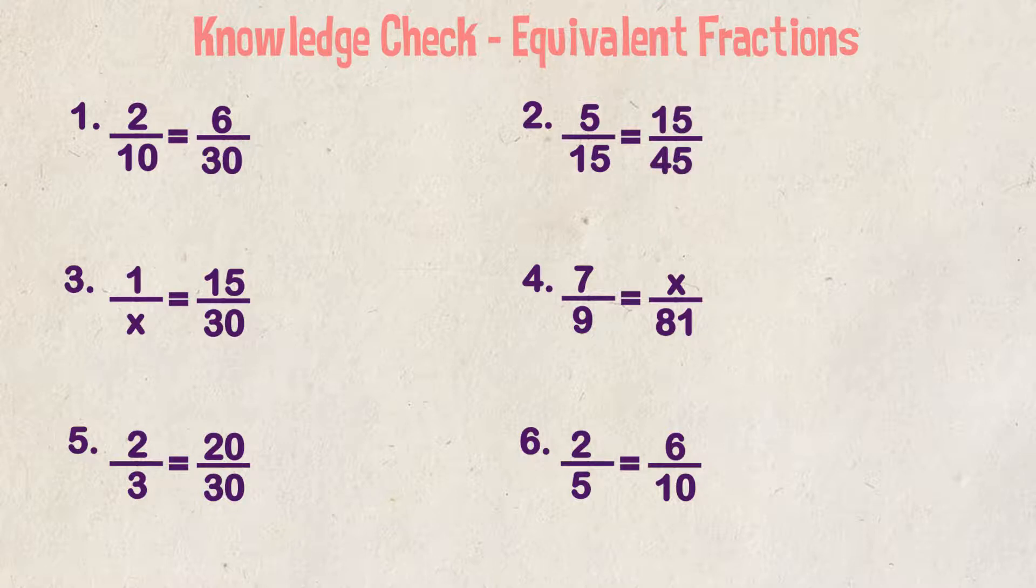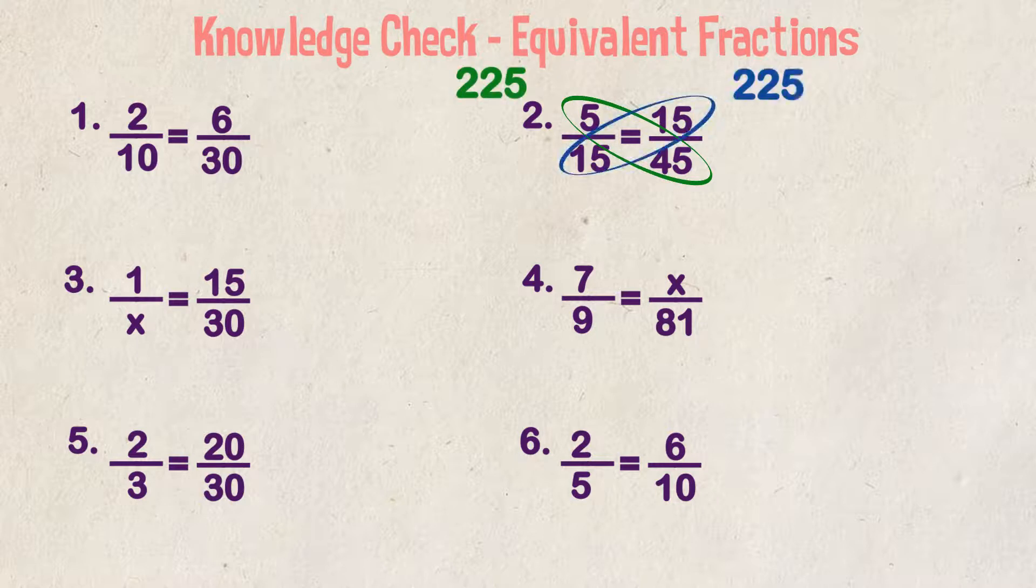As a double check, we can say that 5 times 45 is 225. And if we take 15 times 15, we also get 225. So we know the two fractions are equivalent.